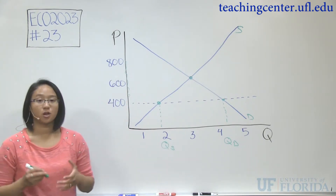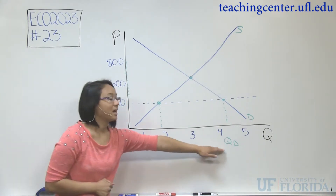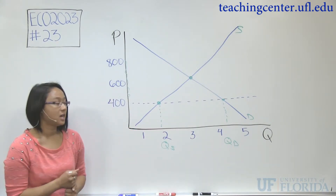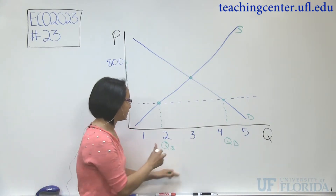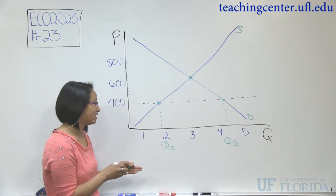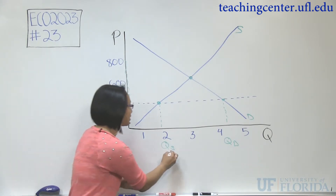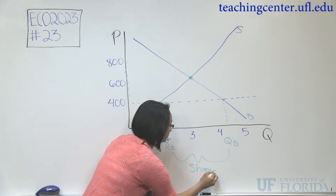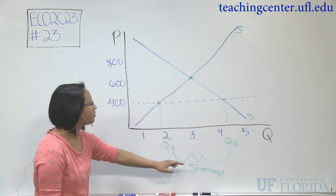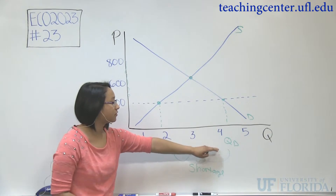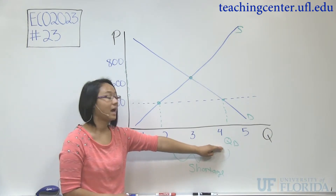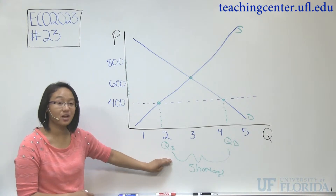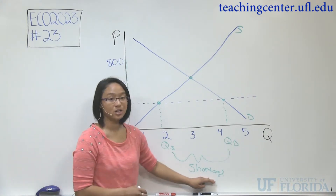To answer the first part of the question, because quantity demanded of 4,000 is greater than quantity supplied of 2,000, you have a shortage of 2,000. Consumers want 4,000 units of rent, but suppliers are only providing 2,000 units of rent — so that's a shortage in the market.